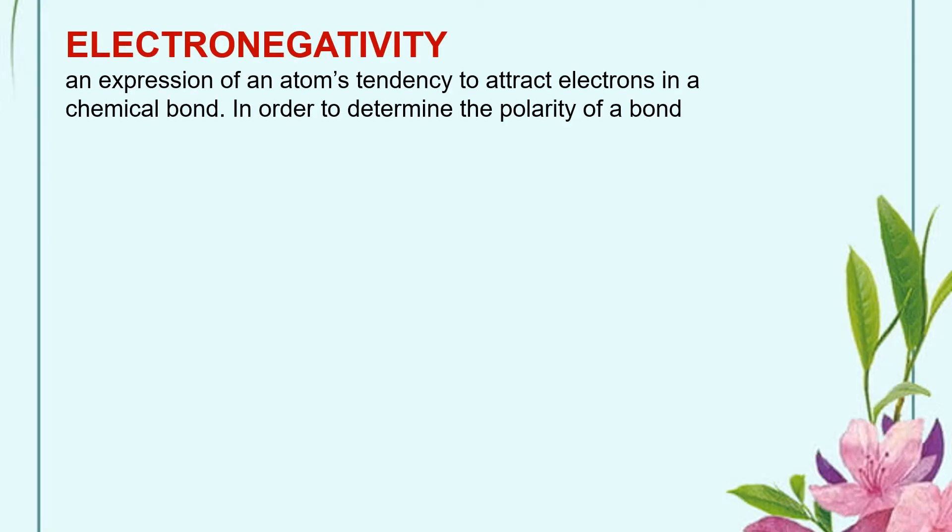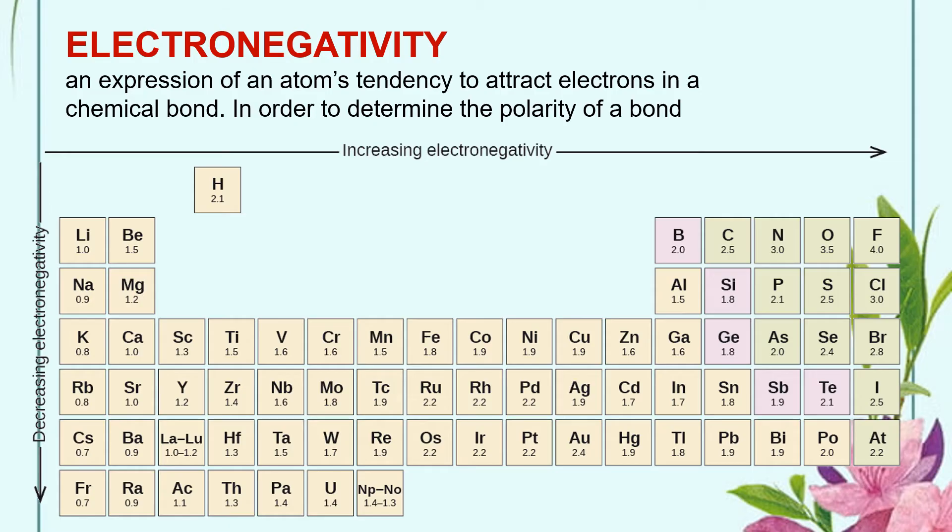The polarity of a bond is determined by a periodic concept called electronegativity. Electronegativity is an expression of an atom's tendency to attract electrons in a chemical bond. In order to determine the polarity of a bond, you must find the difference in the electronegativities of the atoms involved. Take a look at the electronegativity values of some elements in the figure shown. What have you noticed?